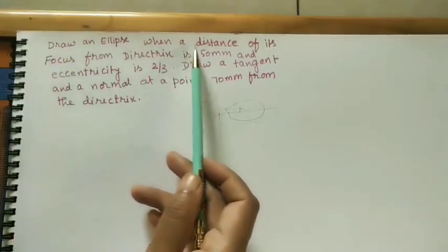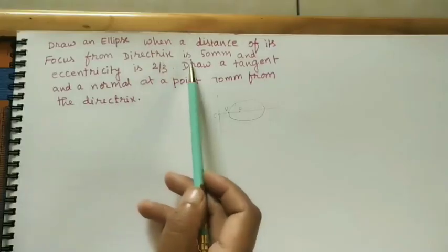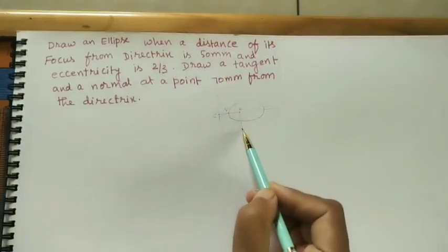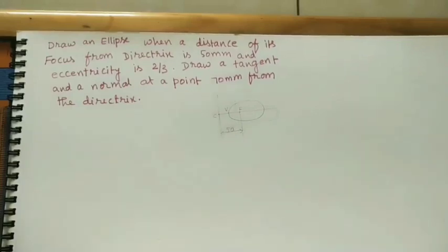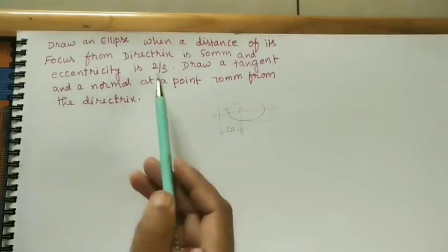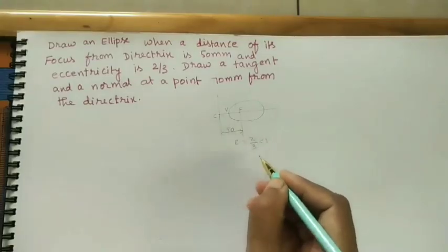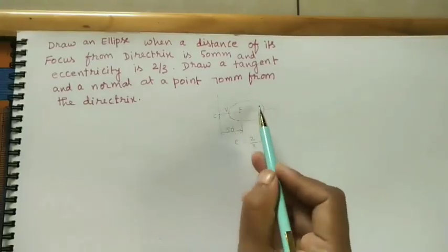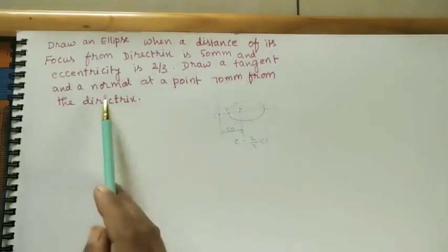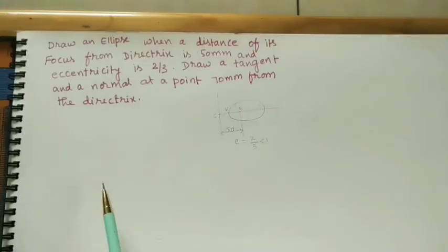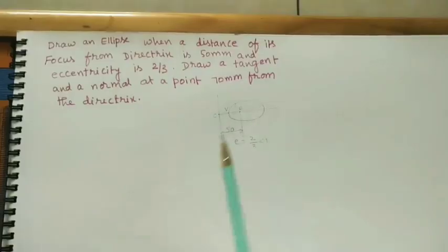First, take the given data. Draw an ellipse when the distance of its focus F from the directrix is 50 mm. The eccentricity, symbol E, is equal to 2 by 3. If it is less than 1, we will get the ellipse — and according to the given value, it is less than 1. Also draw a tangent and normal at a point 70 mm from the directrix. So first we will do the ellipse.